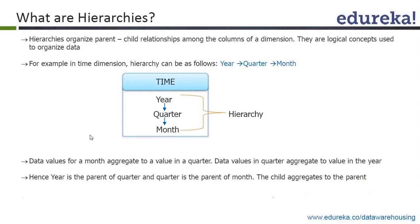If you add three months of a year together it gives you a quarter, and if you add the four quarters together it gives you a year. So you can see there is a parent-child relationship flowing from year to quarter and from quarter to month.